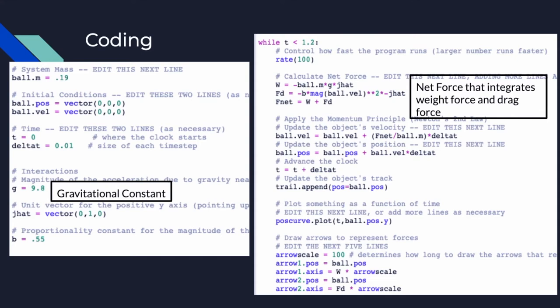Here's some of the coding. You can see the initial vectors for position and velocity were zero, and we were assuming that the drop was in a negative y direction. The proportionality constant for drag force ended up being 0.55 through a series of trial and error. The net force is created by the weight force and a drag force, which opposes the motion.